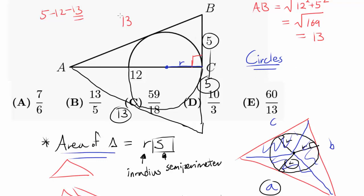The perimeter is 5 plus 5 plus 13 plus 13, which is 10 plus 26, or 36. So the semi-perimeter is 18 in this case.